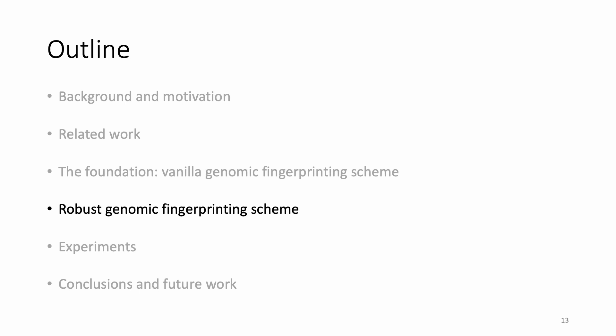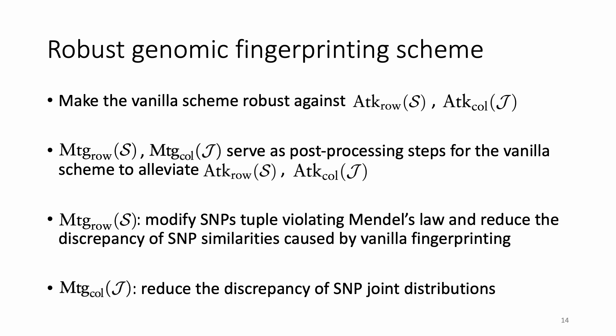As a result, we need to improve the previously developed vanilla fingerprinting scheme for genomic data to make it robust against correlation attacks. To mitigate attacks that exploit row-wise and column-wise correlations among genomic data, we developed corresponding mitigation techniques. These techniques serve as post-processing steps for the vanilla scheme. In particular, the row-wise mitigation technique modifies SNP tuples that violate Mendel's law and reduces the discrepancy of SNP similarities caused by the vanilla fingerprinting insertion. Similarly, the column-wise mitigation technique reduces the discrepancy of SNP joint distributions caused by inserting the vanilla fingerprint.